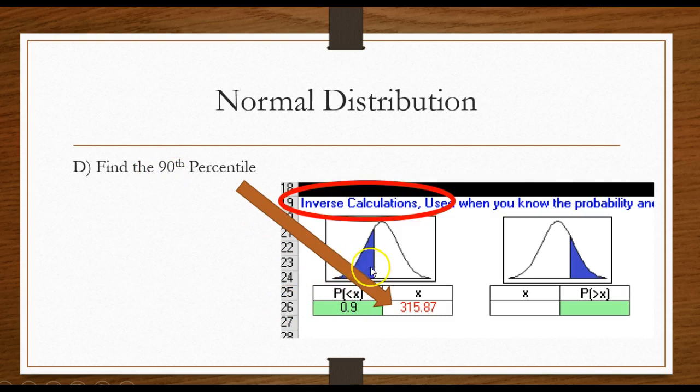The inverse calculations are right below the purple calculations. So find the 90th percentile, that would be to the left here, and I would put in a 0.9 or 0.90, it's the same thing. The 90th percentile is 315.87. What that is saying is that 90 percent of the families spend less than 315.87.